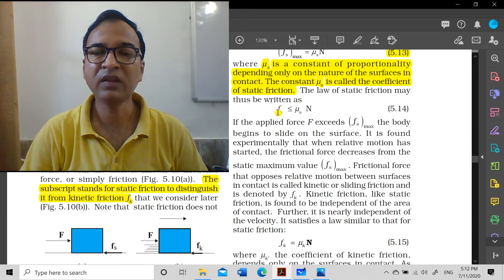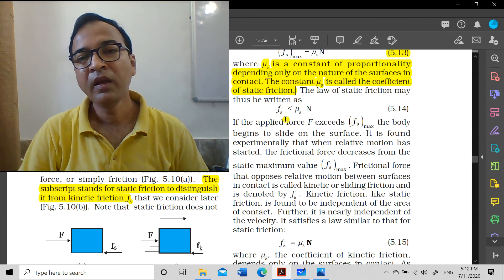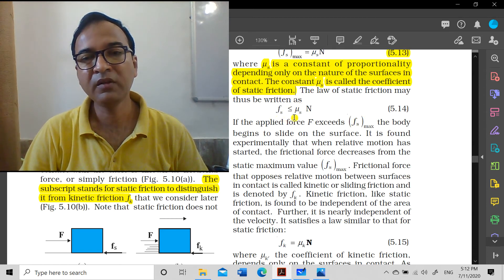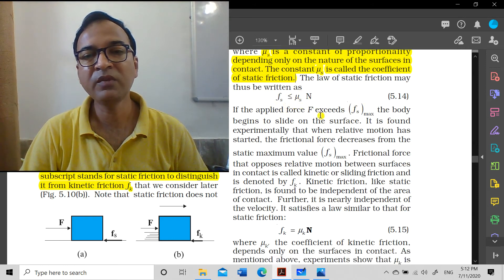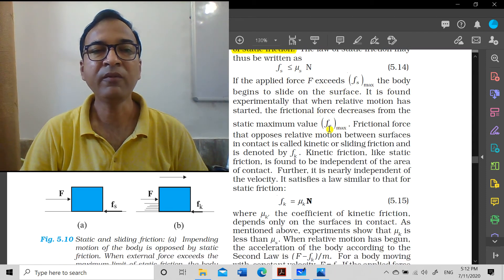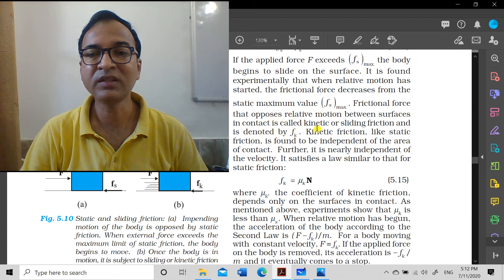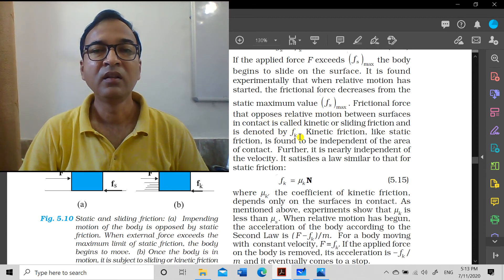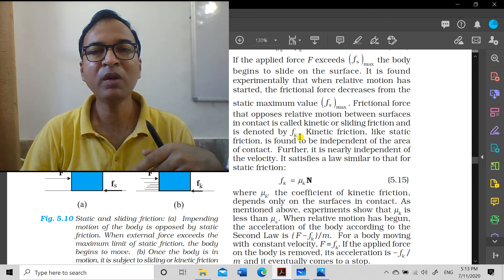The law of static friction can thus be written as: fs is less than or equal to mu s times N - at most this value. If the applied force F exceeds fs max, the body begins to slide on the surface. It is found experimentally that when relative motion has started, the frictional force decreases from the static maximum value fs max. The frictional force that opposes relative motion between surfaces in contact is called kinetic friction or sliding friction and is denoted by fk. Because mu changes from mu s to mu k, fs converts to fk.